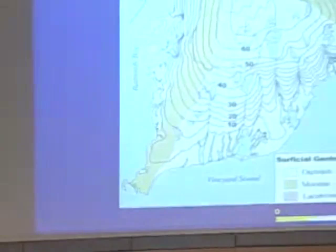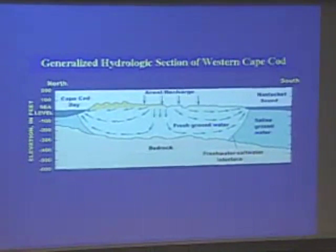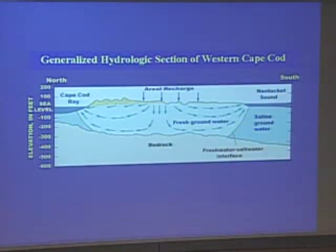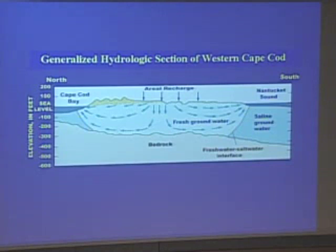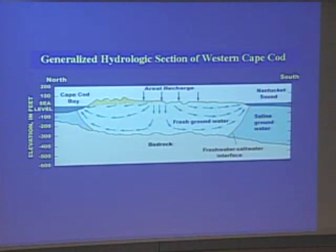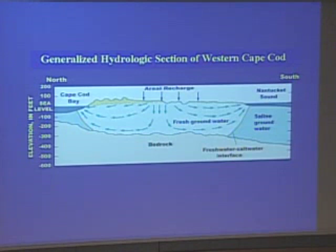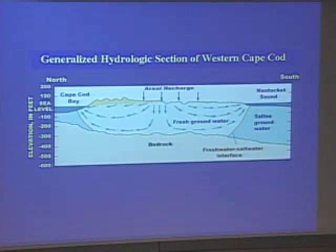Taking a slice north to south through the Cape: here's Cape Cod Bay to the north, Nantucket Sound to the south. The Cape sits on a crystalline bedrock — a granite diorite, relatively impermeable relative to the sand above it. This sand pile left behind by the glaciers in the area of the MMR is about 300 to 400 feet thick. The upper part of the saturated zone is defined by the water table. You have this lens of fresh water fed by aerial recharge from precipitation — we estimate about 26 to 27 inches of recharge a year, translating to about a million and a half gallons per square mile on an average day.